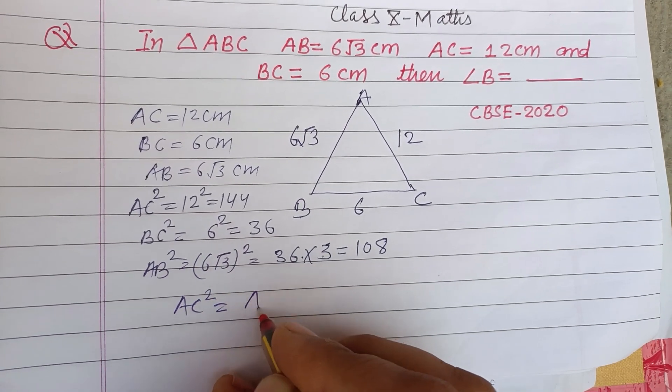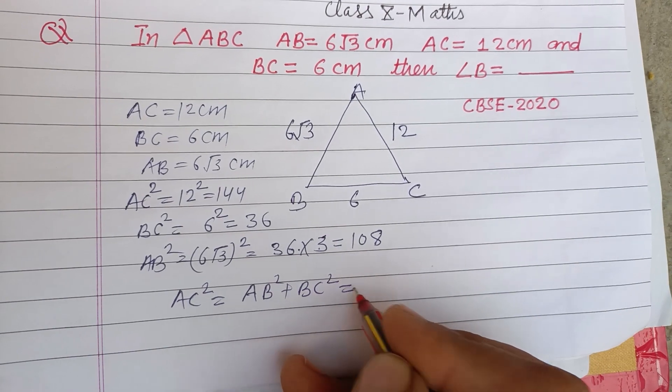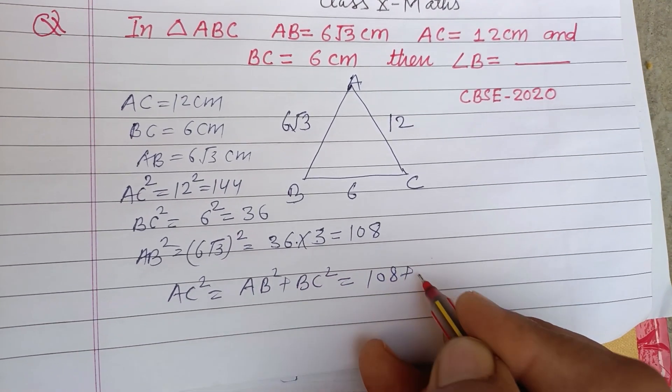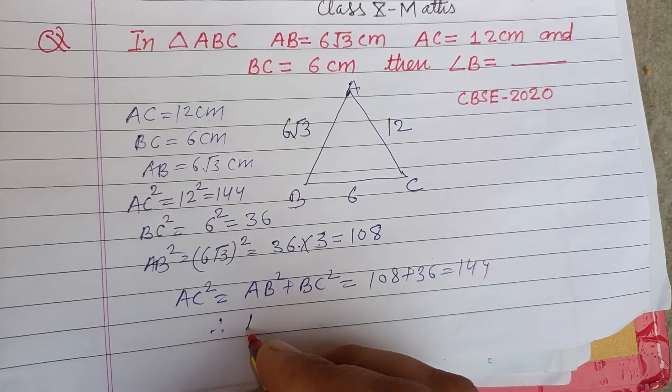Here AC squared is equal to AB squared plus BC squared. This is 108 plus 36, so this is 144. Therefore triangle...